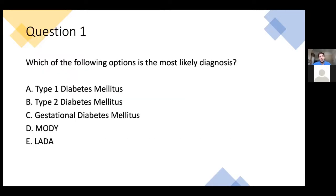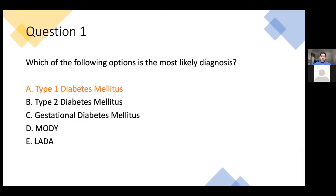Which of the types of diabetes just mentioned does this sound most like? Everyone got it right — it's type 1 diabetes. When you have a young person in a diabetes talk, type 1 is the most common answer, but it's worth being aware of the signs. She was thirsty, she was bedwetting, she'd lost weight — and some of those are actually quite worrying signs in a child as well.